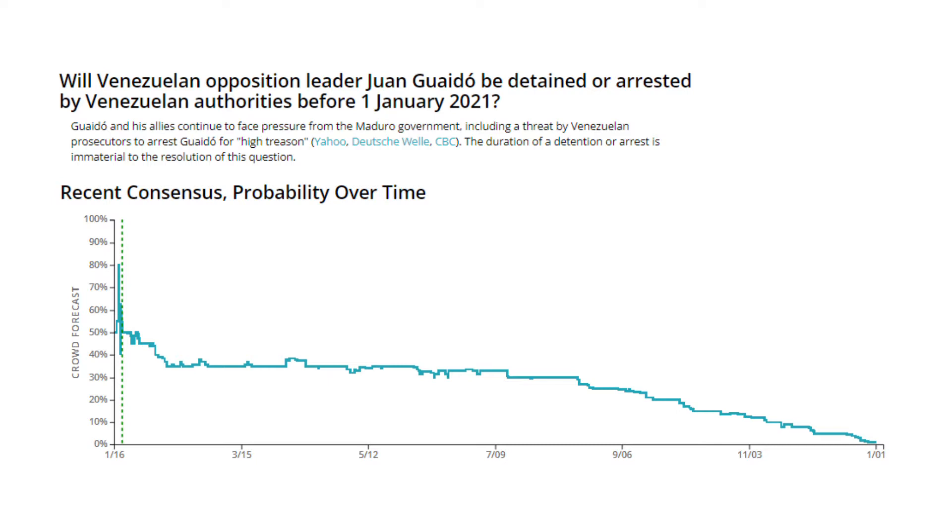Over time as we close in on the end of the forecast window of January 2021 that sense starts declining down and in fact you don't have the detention. So if you are recognizing that and you're putting your probabilities at 10 percent or 20 percent early on you are doing better than the crowd. If you're getting into December and you're still convinced 80 percent, 90 percent that there will be a detention of the Venezuelan opposition you're doing a bad job in terms of forecasting because you're not recognizing what the crowd has already come to recognize.